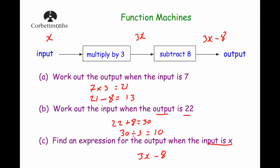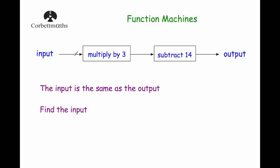Example 4: input, multiply by 3, subtract 14, output. The question says the input is the same as the output — the number you put in equals the number you get out. There are two ways to solve this: trial and improvement, or algebra. If the answer is a nice whole number, trial and improvement works well; if it's a decimal, algebra is more reliable. I'll show both methods.